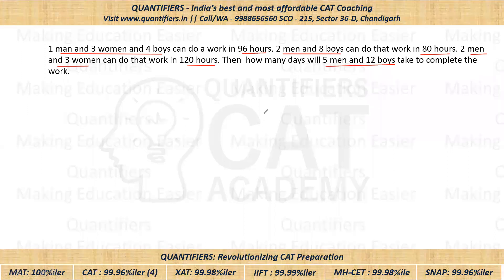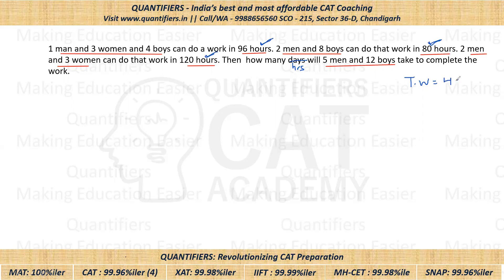Before starting, let me point out a small thing: everything here is given in hours, and the answer will also come in hours. Now the best method here will be the LCM method, since there are three groups all doing the same work. First, we assume the total work. We take the LCM of 96, 80, and 120, which is 480. So 480 is the total work.